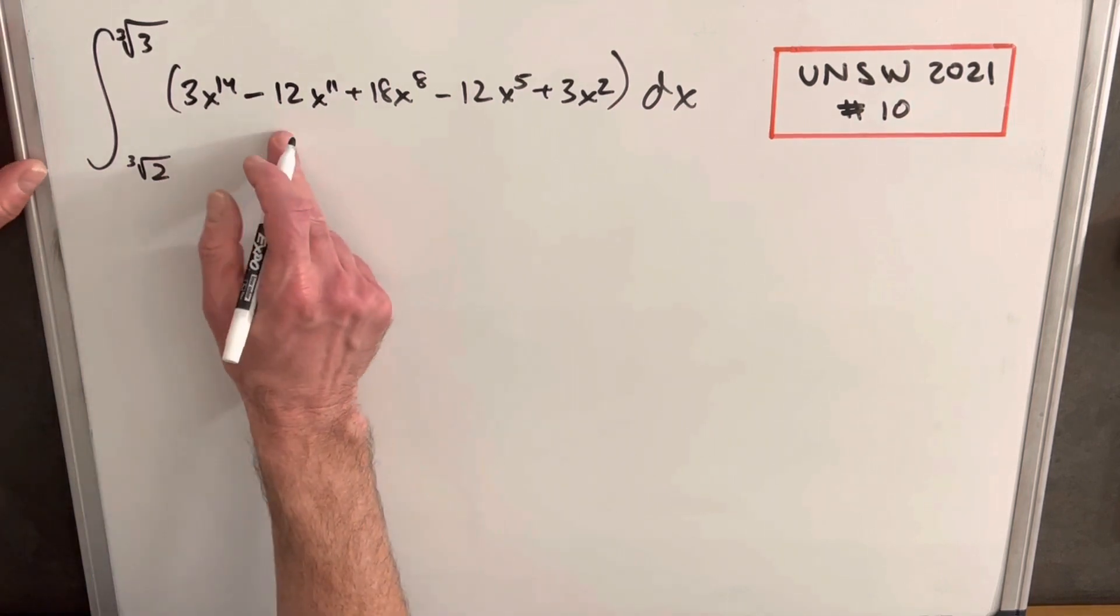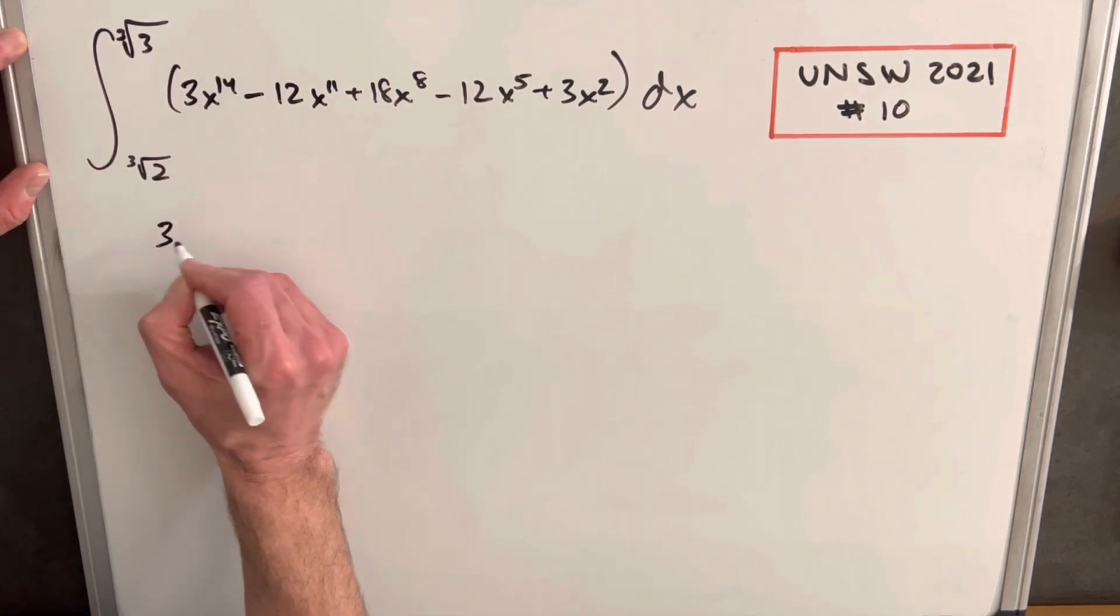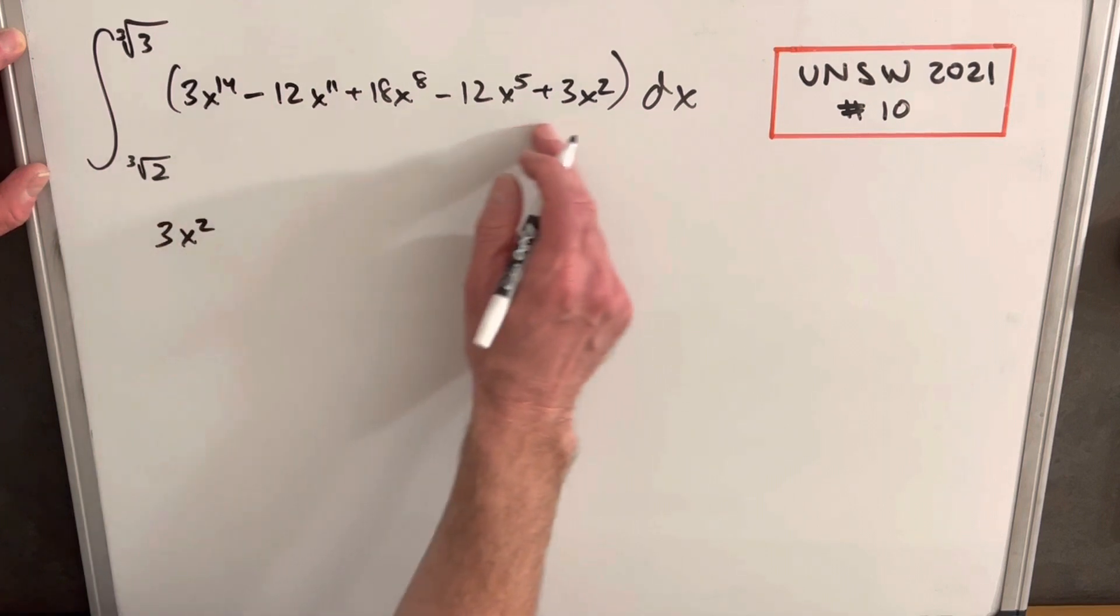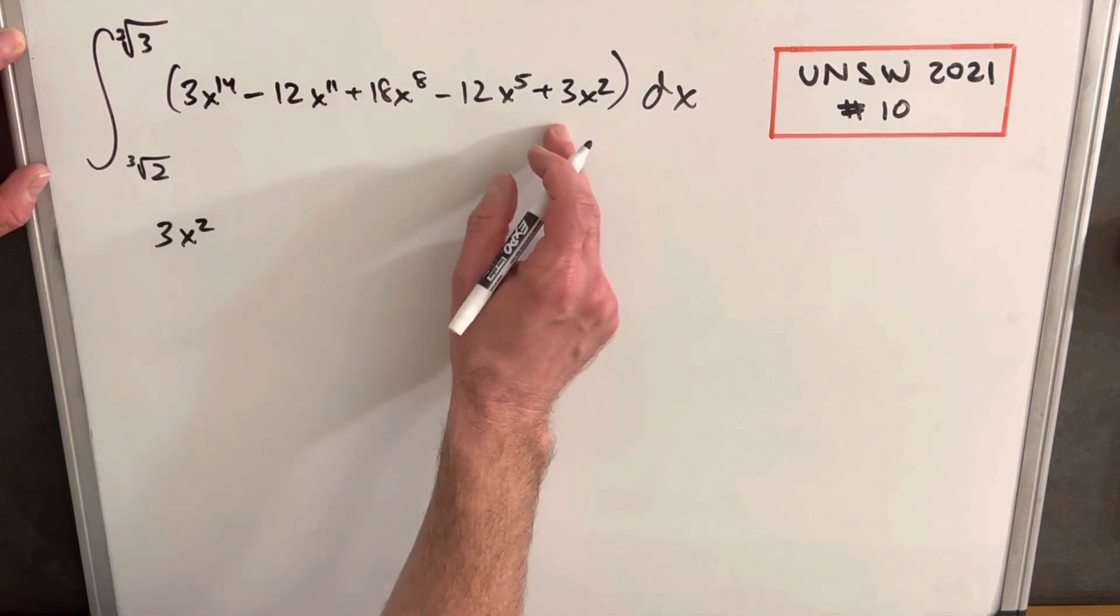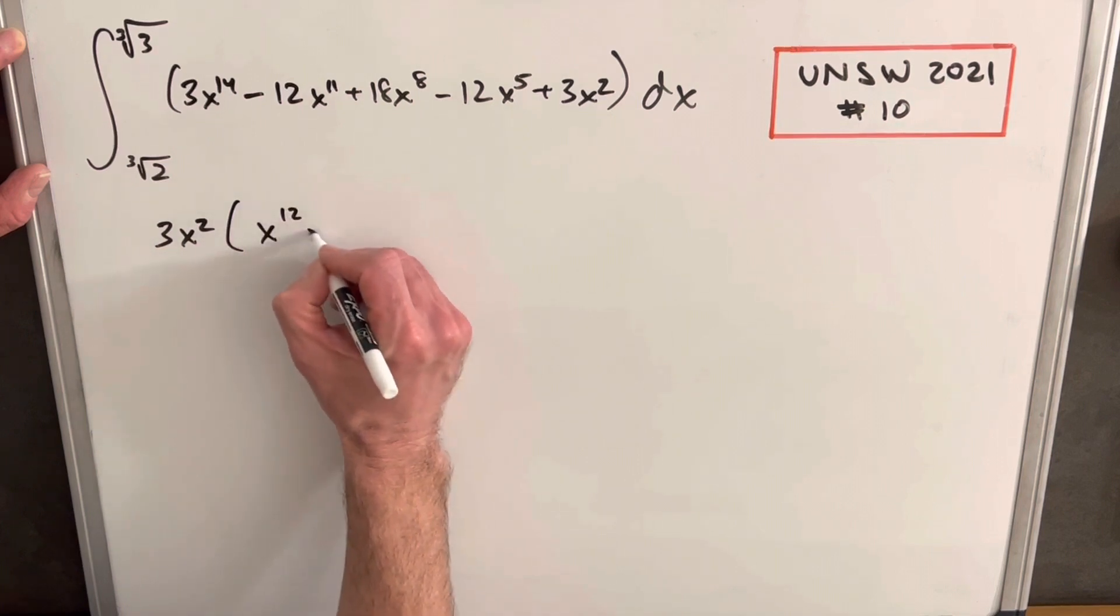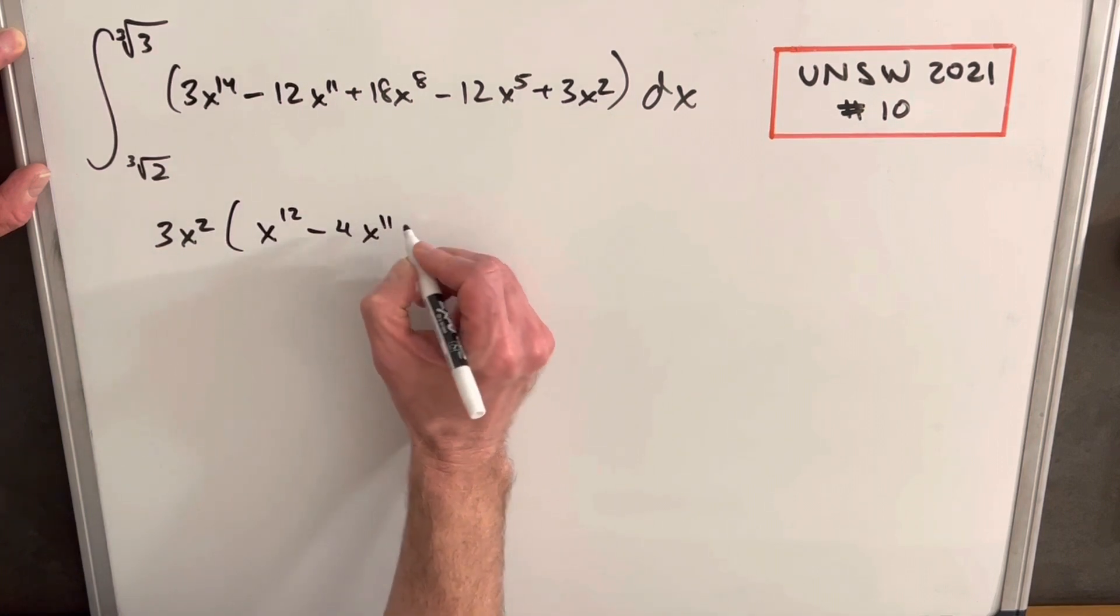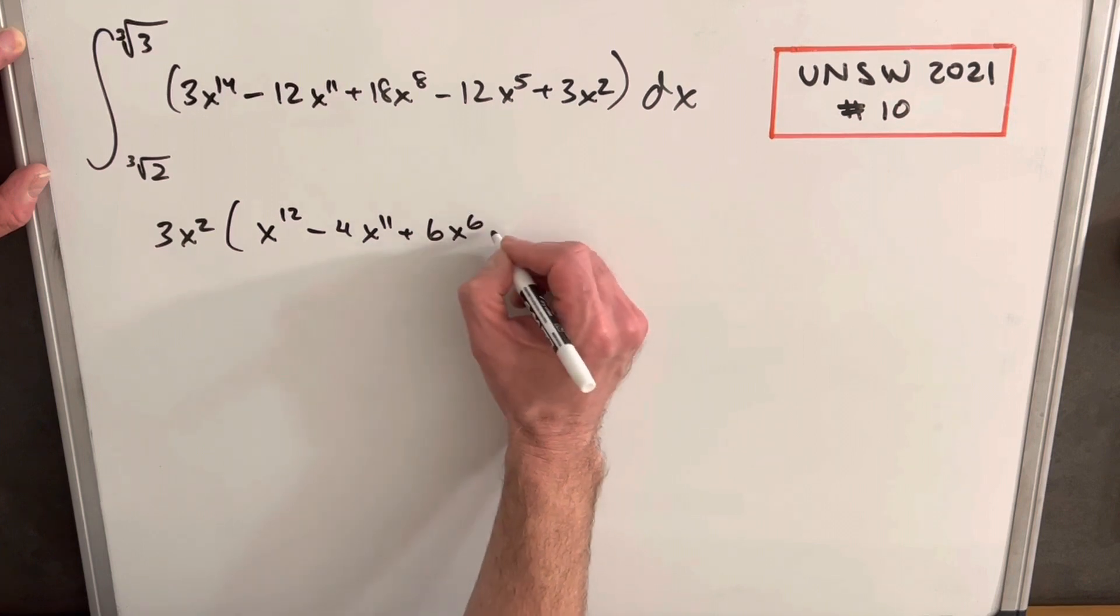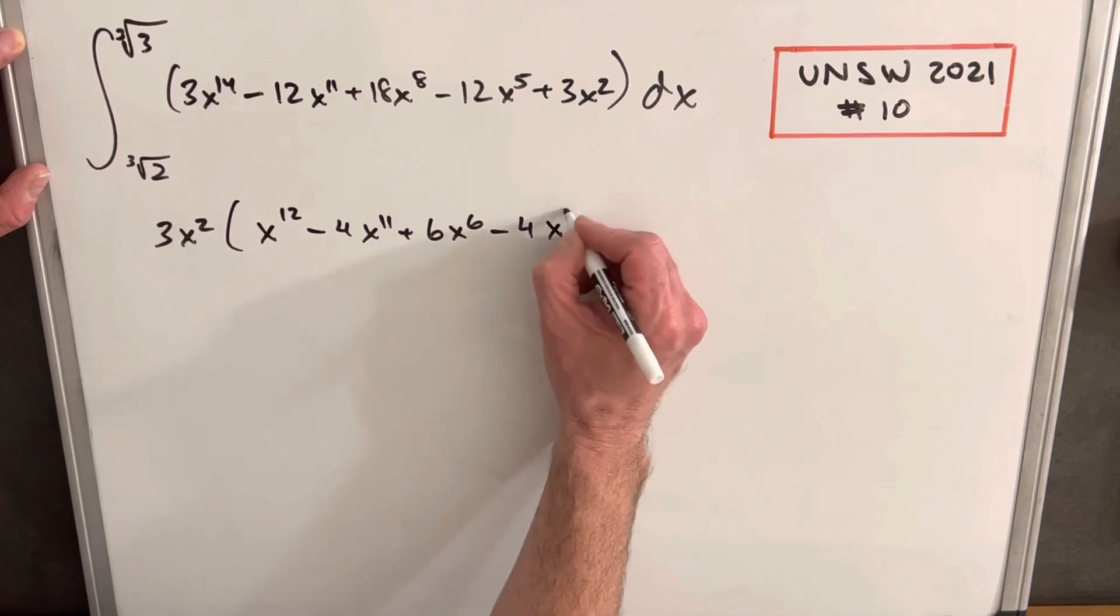So what we want to do is start with the algebra for a moment. I'm going to factor out 3x squared. As you notice, everything has a common factor of 3x squared. So we factor that out: we have x to the 12th minus 4x to the 9th plus 6x to the 6th minus 4x cubed plus 1.